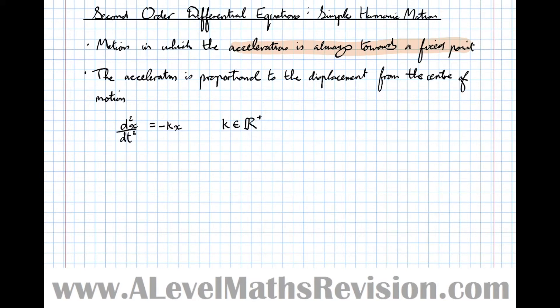So just to explain that again: if the acceleration is always towards a fixed point, the displacement is the distance it moves away from the fixed point. Therefore if it's moving away from the fixed point, its acceleration needs to be negative to pull it back towards the fixed point.